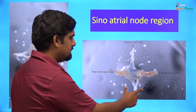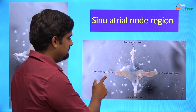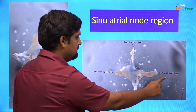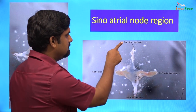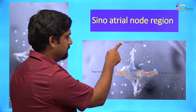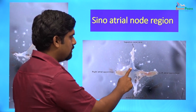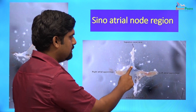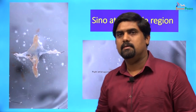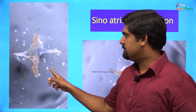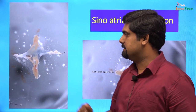This is the dissected SA nodal region of a rat heart, showing the right atrial appendage, the left atrial appendage, the inferior vena cava, and the superior vena cava. The SA nodal region is located in the posterior wall of the right atrium close to the opening of the superior vena cava. This is followed by a video of the same picture showing spontaneous contractions in the SA nodal region.